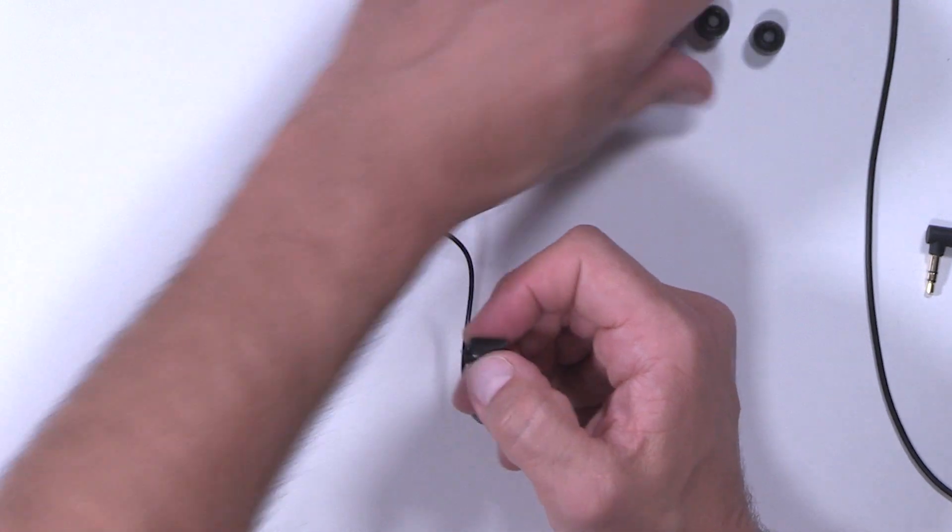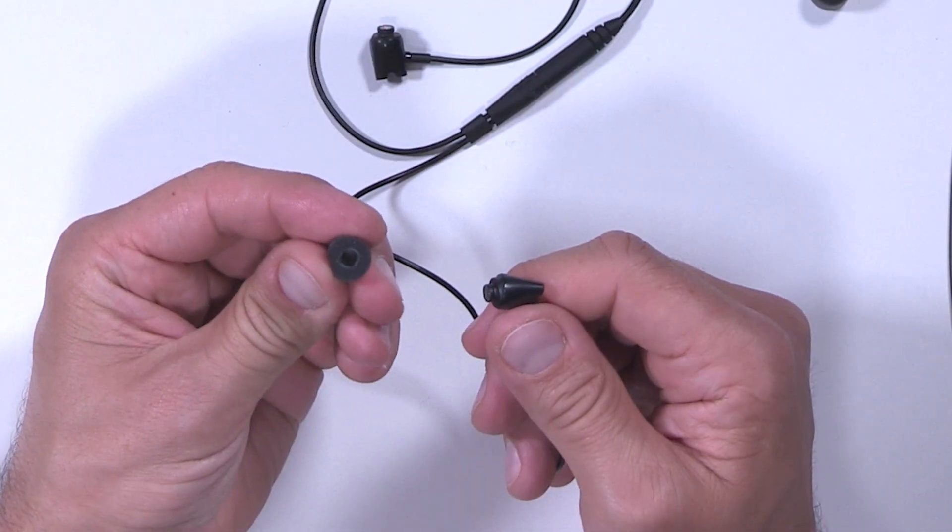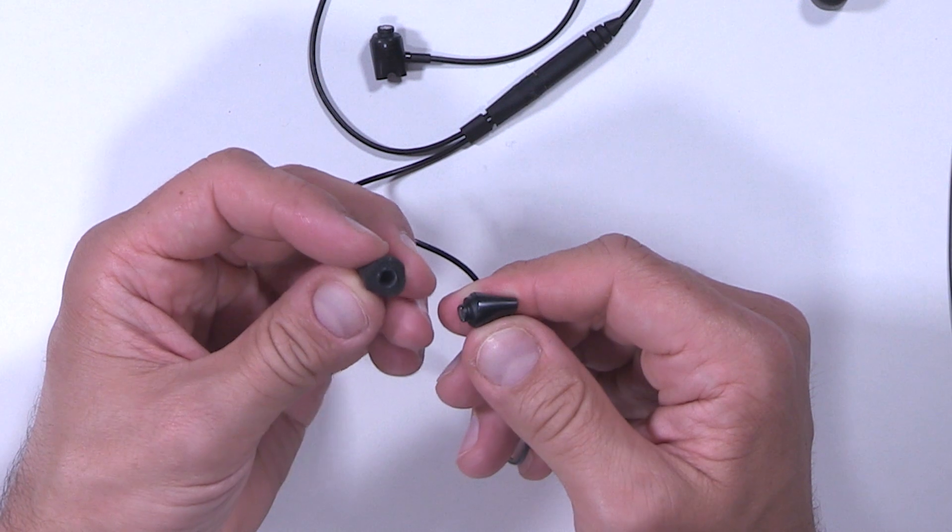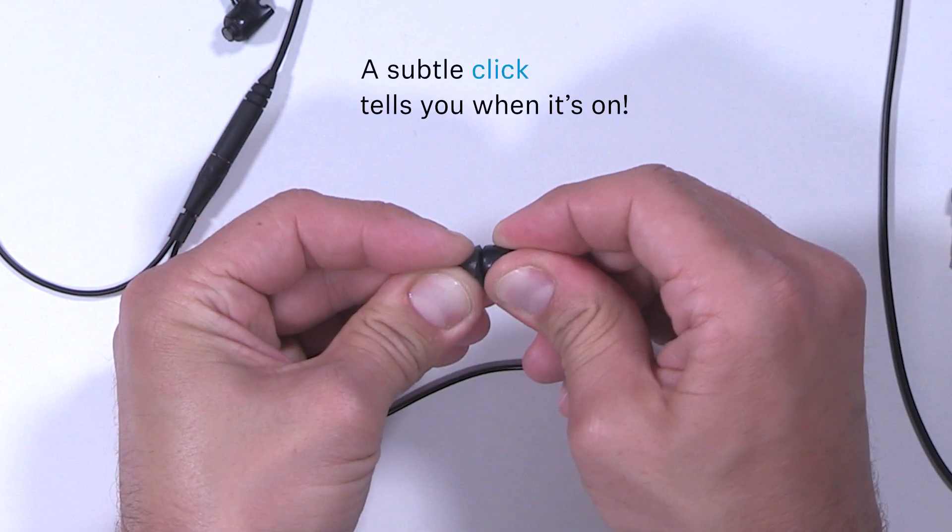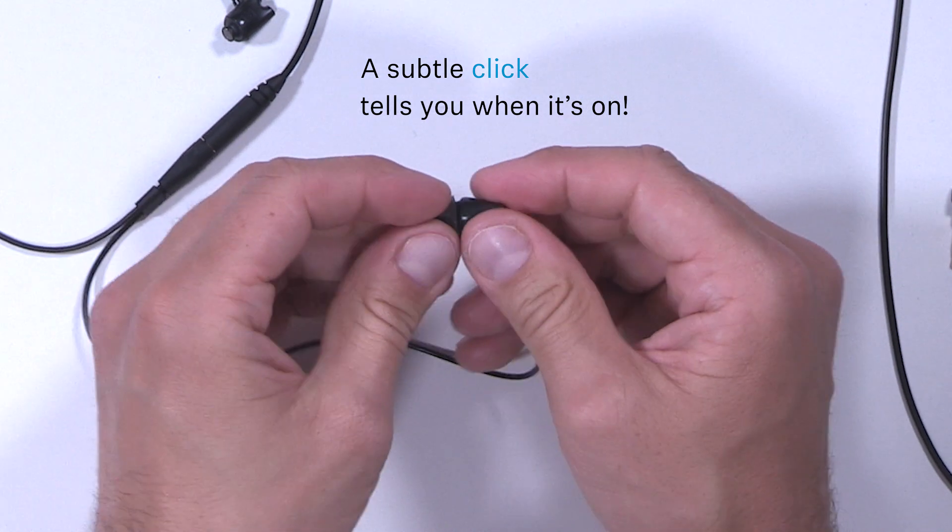There's a plastic tube inside the tip itself to make up for that. Here also, start at an angle and squeeze it on in a curve until you feel and hear a subtle click. That means it's on there.